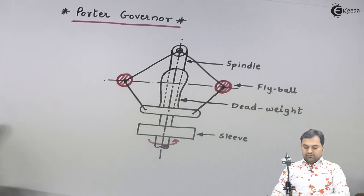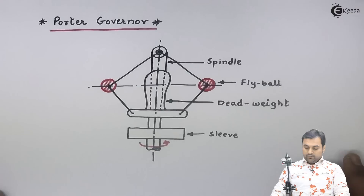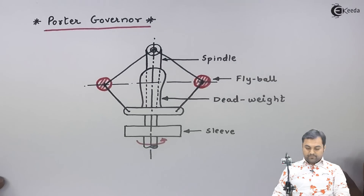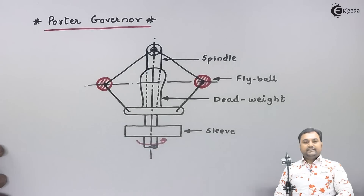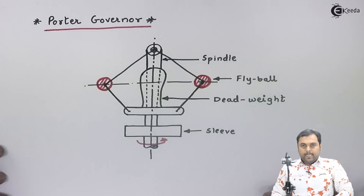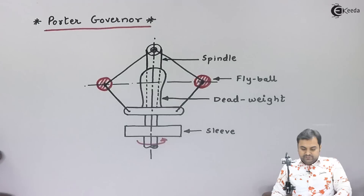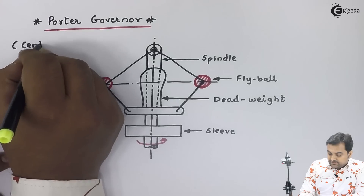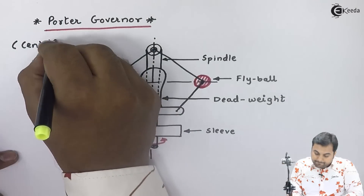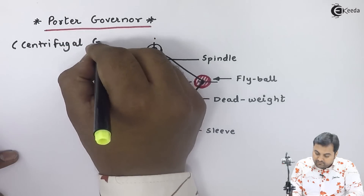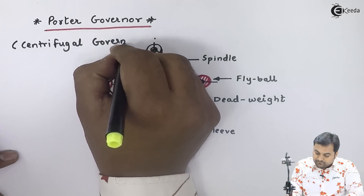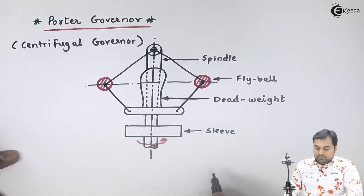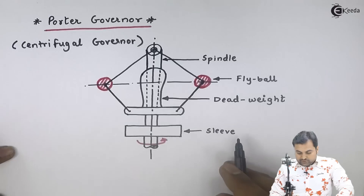Now let us start with the first type, that is the Porter governor. The Porter governor comes into the category of loaded governor, and loaded governors are in the category of centrifugal governors. So we can say that the Porter governor is first of all a centrifugal governor, and it works on the principle of centrifugal force.